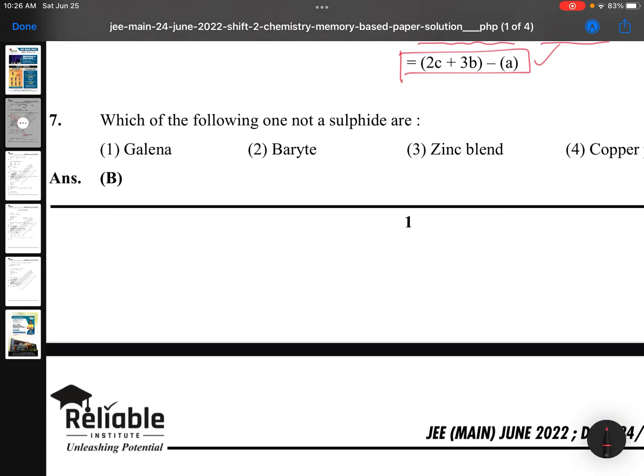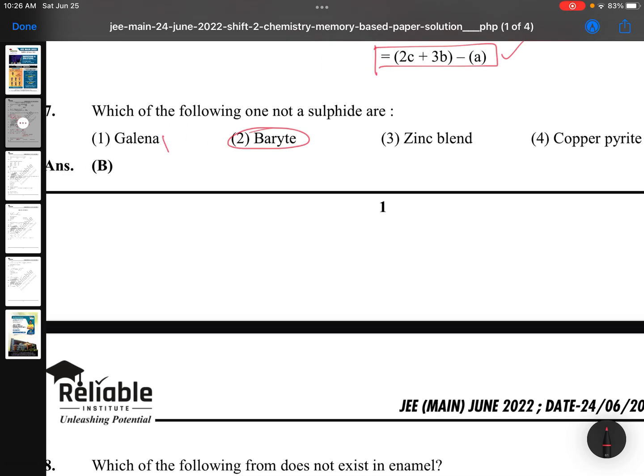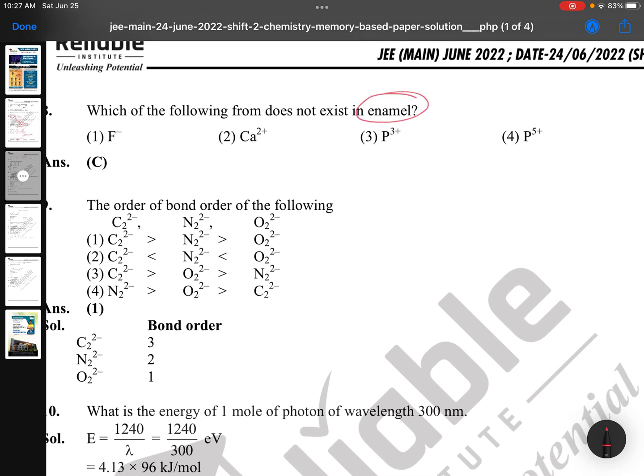Which of the following one is not a sulfide ore? Galena is PbS, zinc blende is ZnS, copper pyrites is copper sulfide and iron sulfide. Baryte is barium sulfate. Which of the following form does not exist in enamel? Enamel generally contains fluorapatite and chlorapatite compounds. Fluorapatite is Ca3(PO4)2 taken twice, CaF2. Basic level. If you see p-block elements of second year NCERT, halogens introduction, you can find this point. Purely NCERT-based.